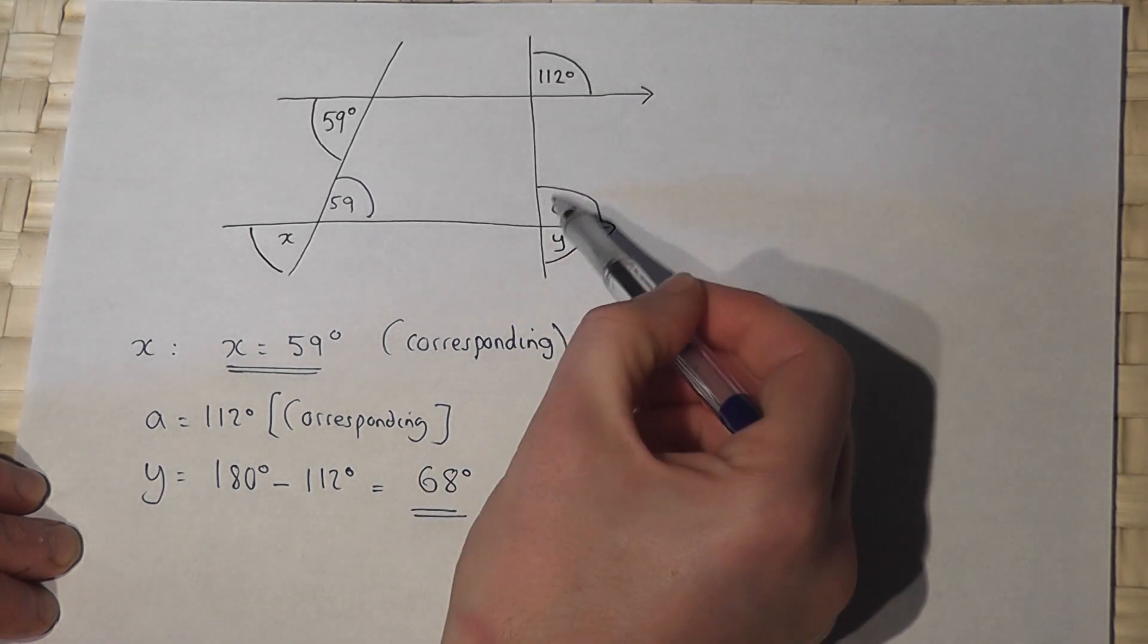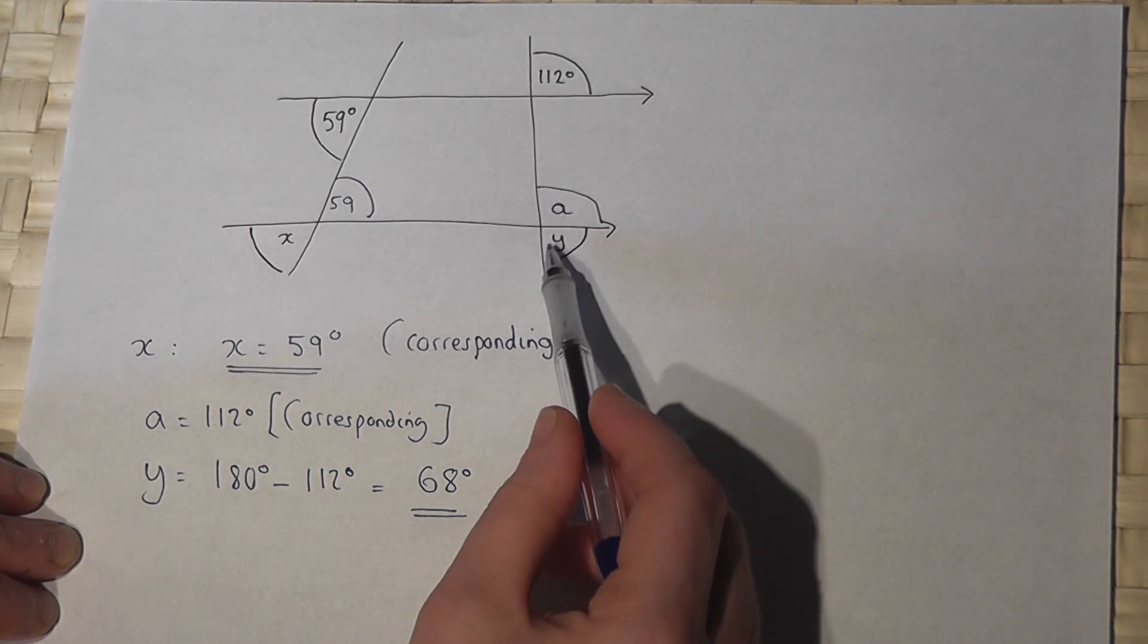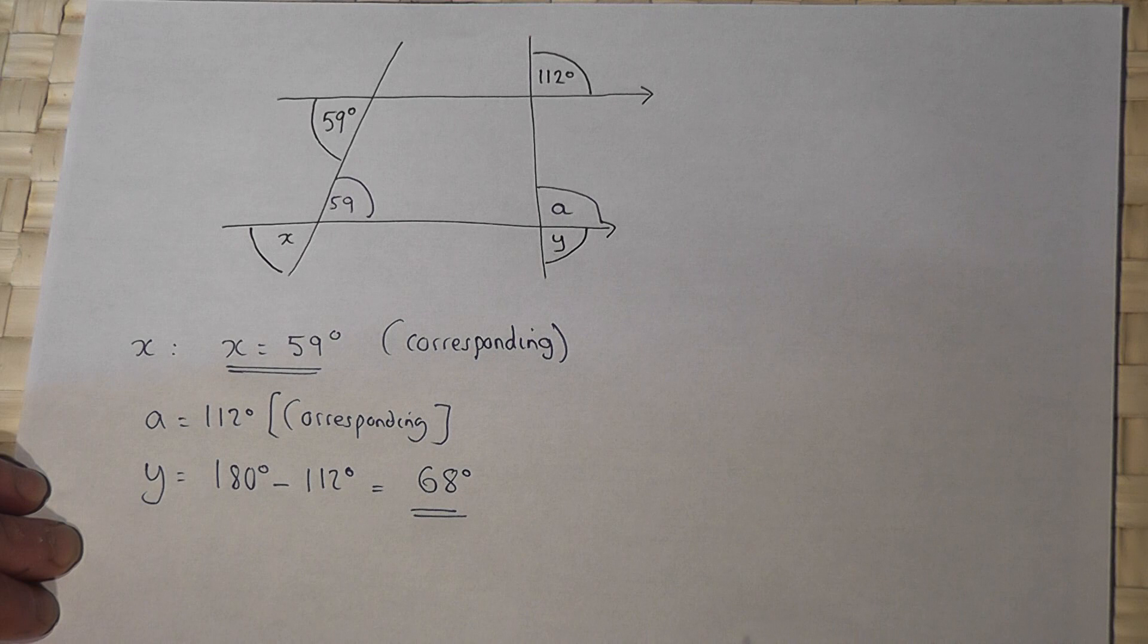So angle A and 112 correspond. Angle Y on a straight line with A, so therefore 180 take 112 is 68. That's one option.